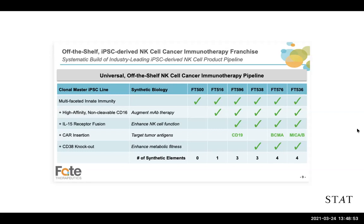Then if you step up to a product like FT-516, they're adding CD16 — a receptor that helps connect with an antibody — so that the NK cell can bind to a tumor-killing antibody drug like Rituxan. And then if you go to something like FT-596, there's a little bit more engineering: you're taking that NK cell, enhancing it with the CD16 receptor, and then also adding a CD19 CAR. So you're combining both the CD16 and CD19 CAR on the same cell. That just shows all the different ways you can manipulate these NK cells to make them more potent.